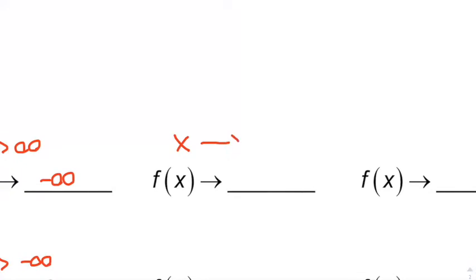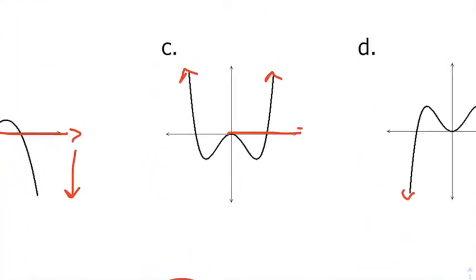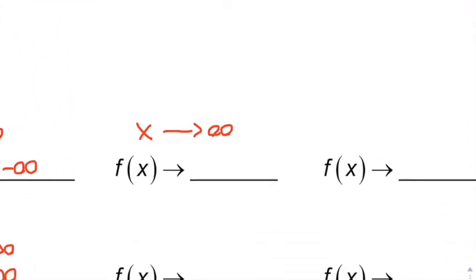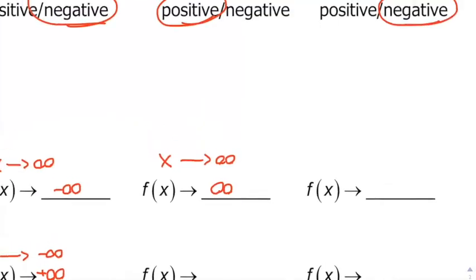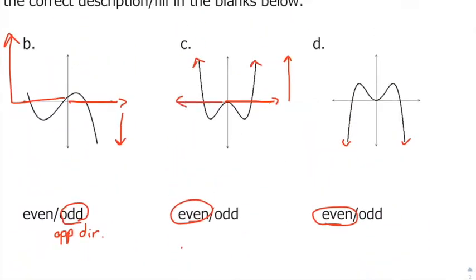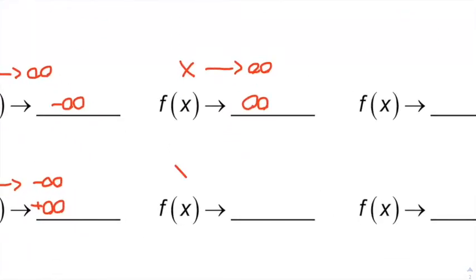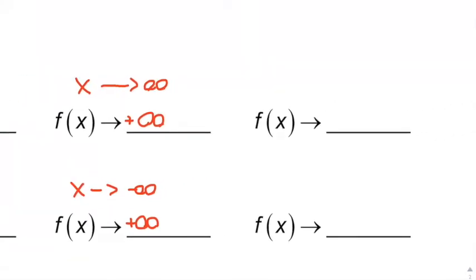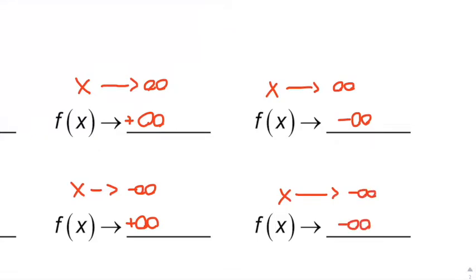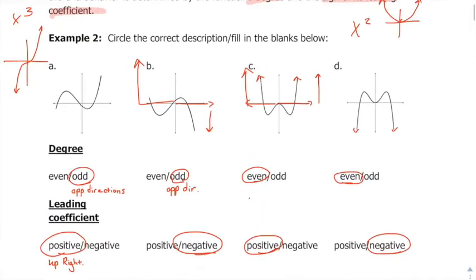As x approaches infinity — going towards the right — the graph is going up, so f(x) approaches infinity. As x approaches negative infinity — the left side — the graph still goes up, so f(x) still goes to positive infinity. For the other graph where both ends go down: as x approaches infinity, that's negative infinity; and as x approaches negative infinity, f(x) approaches negative infinity as well. So as it goes to the left, it goes down.